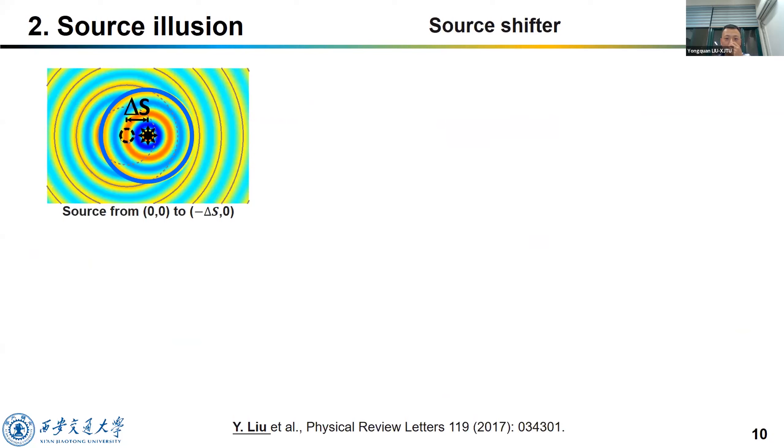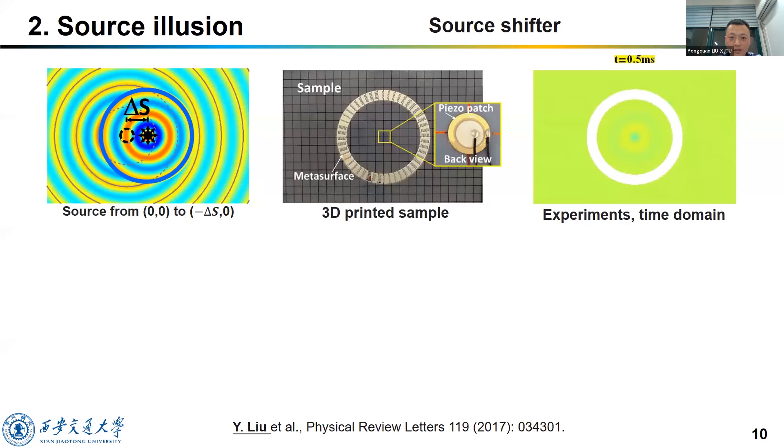Now, I would like to give you some examples of source illusion. The first one is a source shifter. If we place the source in the center and the wave looks like to generate from another position minus delta S zero. We designed and fabricated the sample shown in the top figure. The sample is an acrylic plate with about 30 by 20 centimeters square. So we just need an ordinary 3D printer to print it.